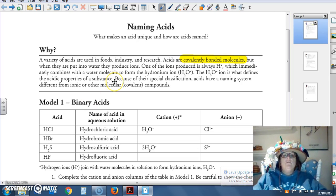A variety of acids are used in foods, industry, and research. Acids are covalently bonded molecules, but when they are put into water, they produce ions.